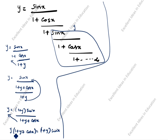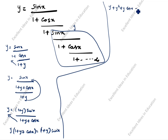We will multiply inside the bracket: y times 1 is y, y times y is y², y times cos x is y·cos x. Equal to (1 + y)·sin x, which is sin x + y·sin x.